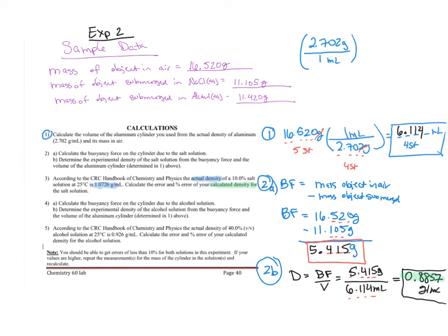I made my numbers up, so my density is quite off. Yours should be a little bit closer. You're going to use the directions for error and percent error that you were given in experiment number one. Show all of your work, box your final answers.